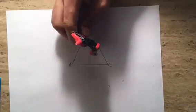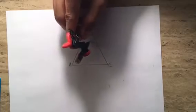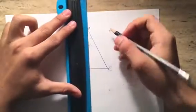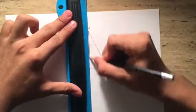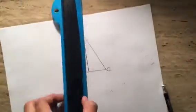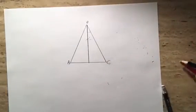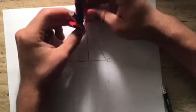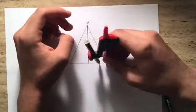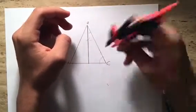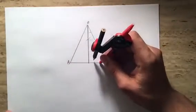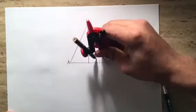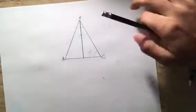Once you construct one arc, make sure to keep the same distance — you don't want to mess up the distance because you're going to need it further along. Now what you want to do is construct the line down the middle just like that, and then do it for C as well, keeping the same distance. Construct the arc and do the same as you did for B.